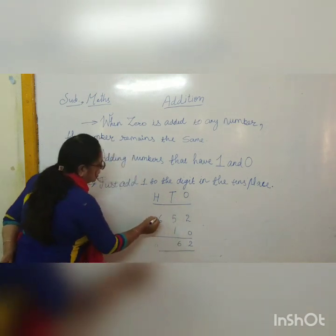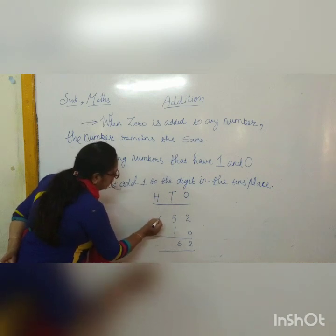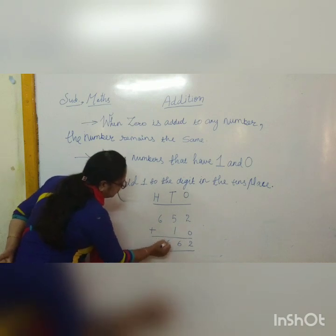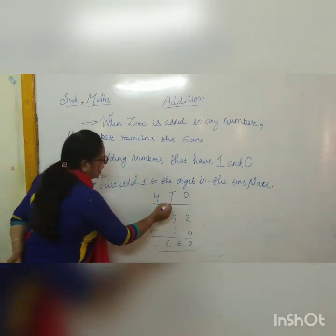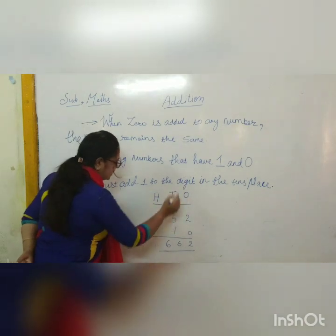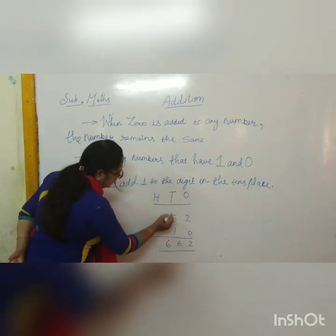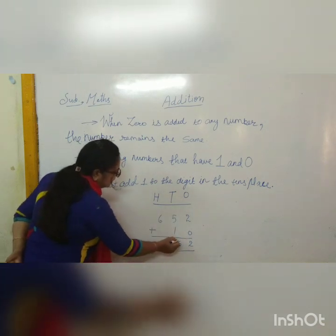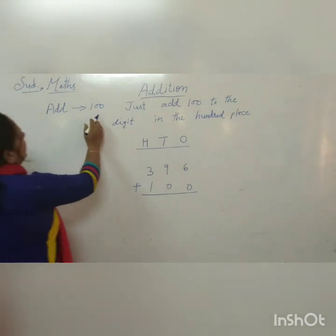Now at the hundreds place, there is no number to add. So we write the same digit 6. So 6 hundreds, 5 tens, 2 ones plus 1 ten, 0 ones becomes 662.